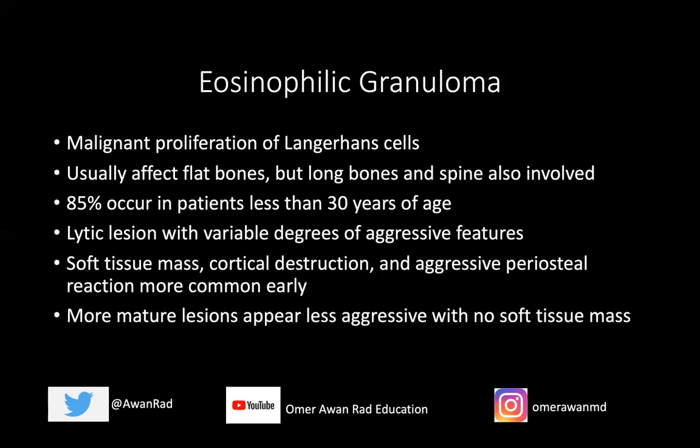More commonly, more mature lesions appear less aggressive with time — usually no soft tissue mass, and periosteal reaction may or may not be present. Treatment is very variable: sometimes you can just observe and watch these lesions as they completely regress with time. Other times you may need bone grafting and curettage, chemotherapy, radiation therapy, or surgery. It depends on the patient, what it looks like, and whether there are systemic symptoms.